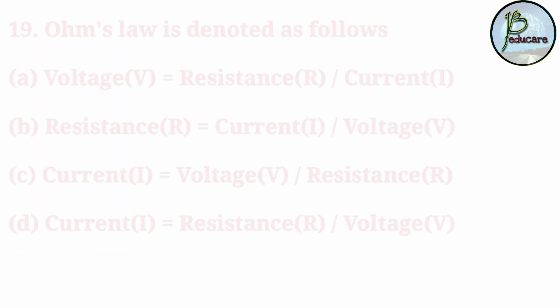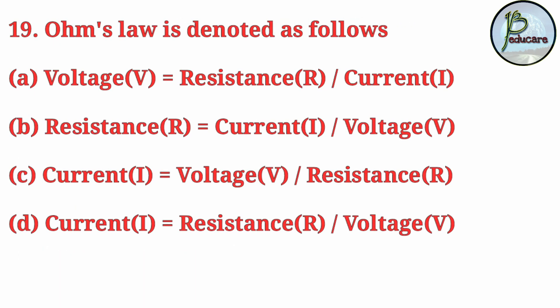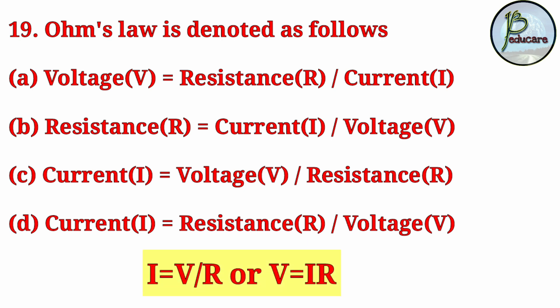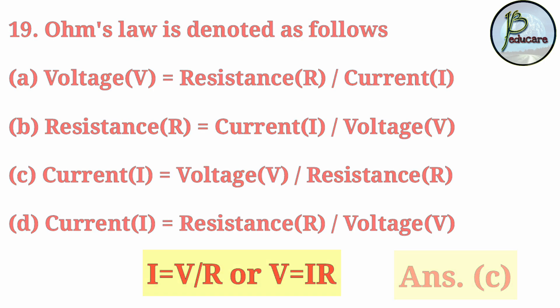Next question: Ohm's Law is denoted as? Ohm's Law can be written as I = V/R. The correct answer is C: current I equals voltage V divided by resistance R.